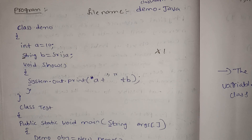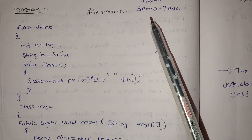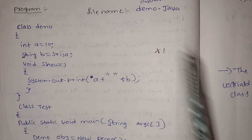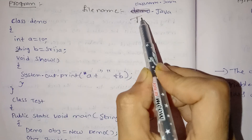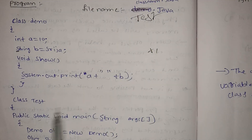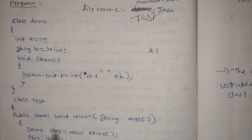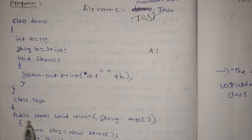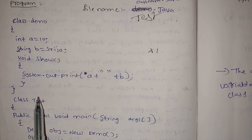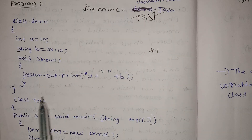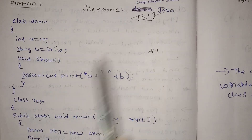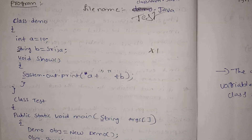The first program's file name is demo. We have demo here, but we also have test. Why is there a public static void main? Where is the public static void main? We have test. Test.java — the test name is the class name, and the class name is the .java file.